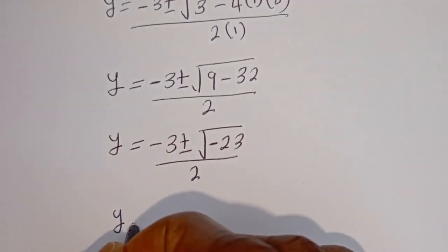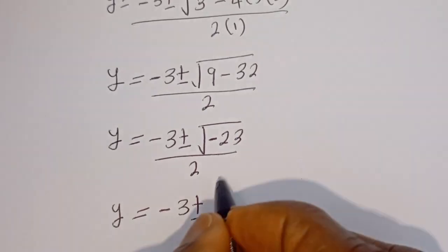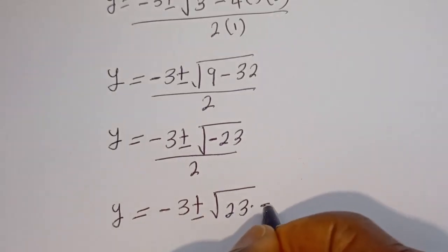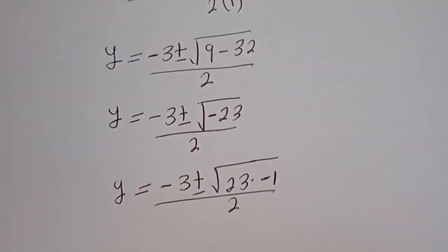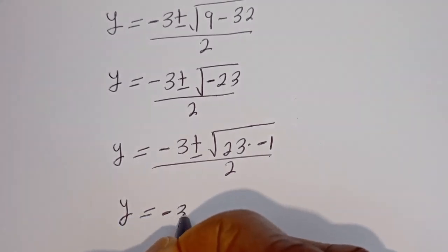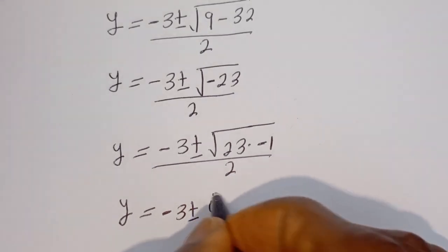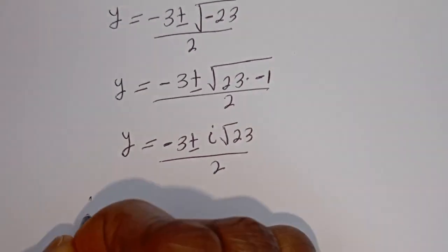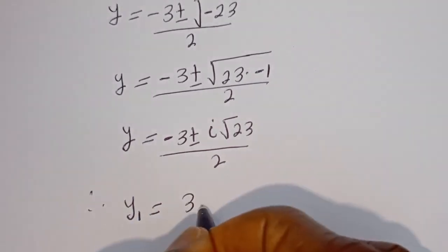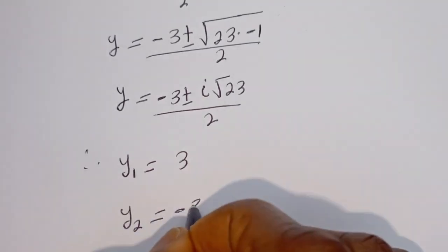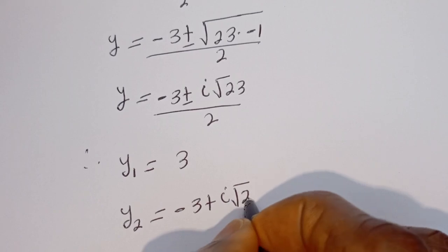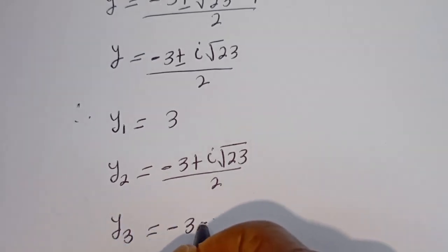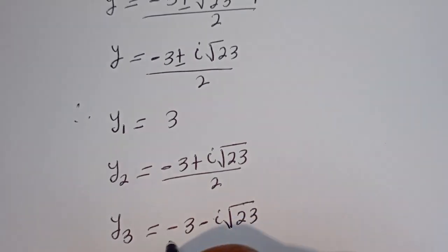Then y equals minus 3 plus or minus: square root of minus 23 can be written as square root of 23 multiplied by square root of minus 1, over 2. Since square root of minus 1 is i, we have y equals minus 3 plus or minus i root 23, over 2. Therefore our final answers are: y₁ equals 3, y₂ equals minus 3 plus i root 23 over 2, and y₃ equals minus 3 minus i root 23 over 2.